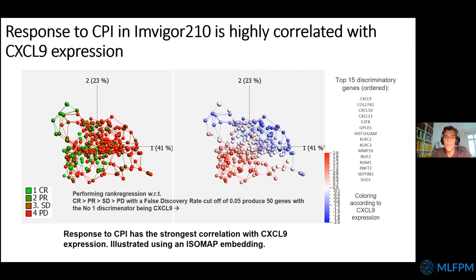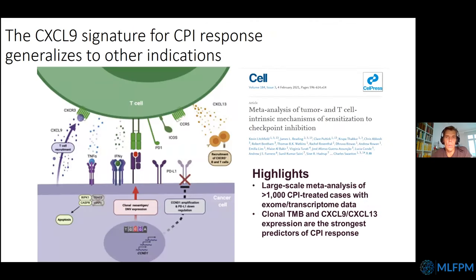CXCL13, a B-cell recruitment chemokine, also appears in the list. A recent meta-analysis from February 2021 by Charles Swanton and colleagues across many checkpoint-inhibition-treated cases found that the strongest predictive biomarkers overall were tumor mutational burden, CXCL9, and CXCL13 expression — corresponding to T-cell and B-cell chemokines.